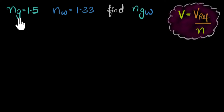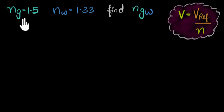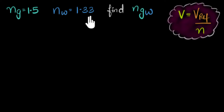If that reference medium is not mentioned, then we'll always treat it to be vacuum. So for glass, for example, the speed of light in glass is speed of light in vacuum divided by 1.5.